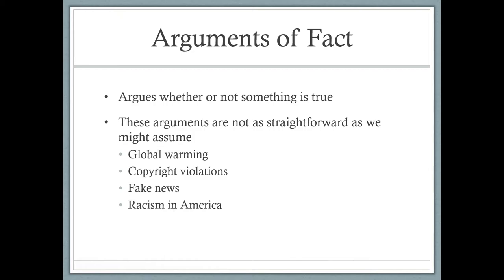Racism — issues of race and racism in our country. Is someone being racist or not? Are they being prejudiced or not? Sounds like an easy case to make, but not so much, because determining what someone is truly thinking and whether their actions were based on pure or impure motives — these are difficult cases to make. Maybe we're accusing someone of being racist — we've got to be careful because maybe they are, truly. Maybe they're not. And how do we prove or disprove that? So arguments of fact are not easy arguments to make. They're not straightforward.